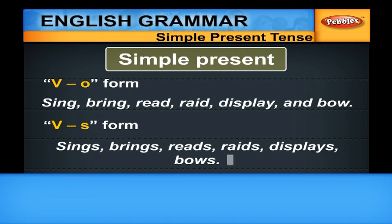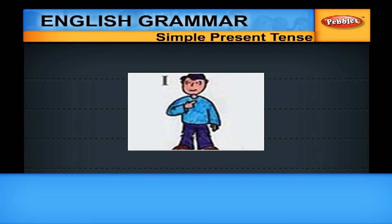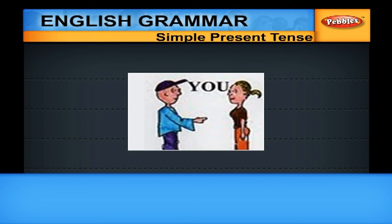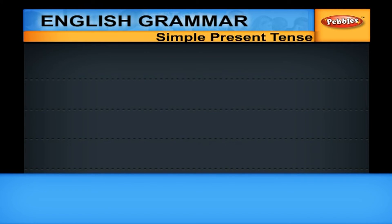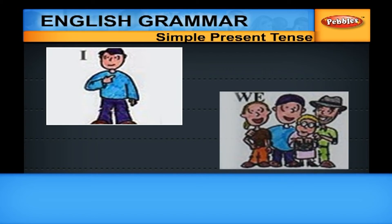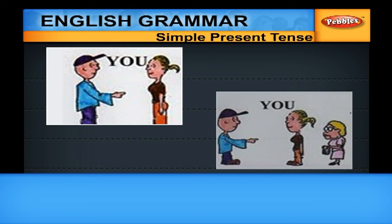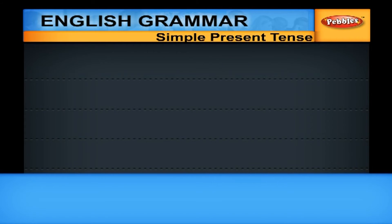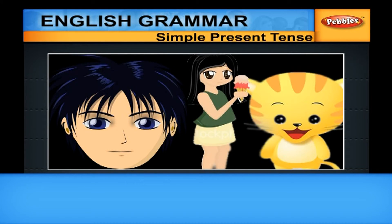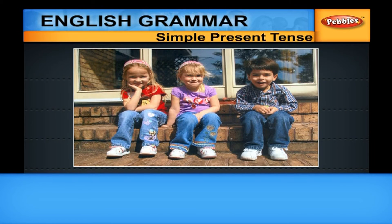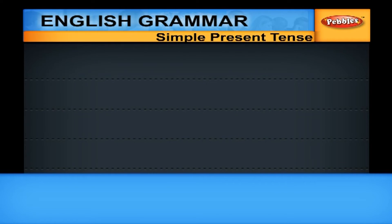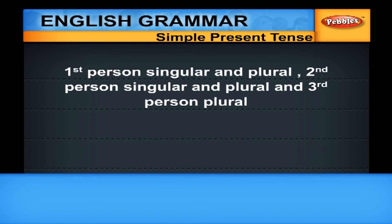Where are we going to use the base form, and where are we going to use the VS form? You know the three persons: first person singular — I, plural — WE; second person singular and plural — YOU; third person singular — HE, SHE, IT, plural — THEY. If it is first person singular and plural, second person singular and plural, and third person plural, you have to use the base form of the verb.